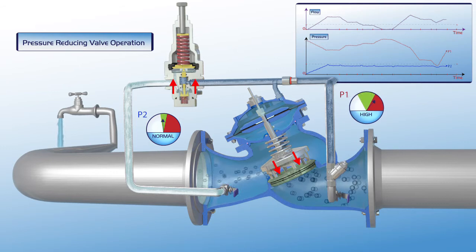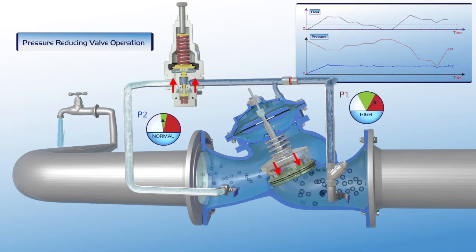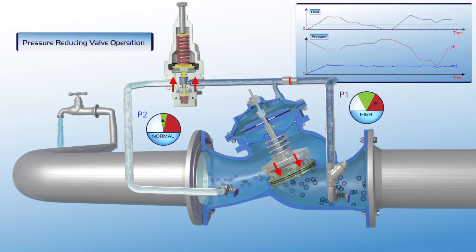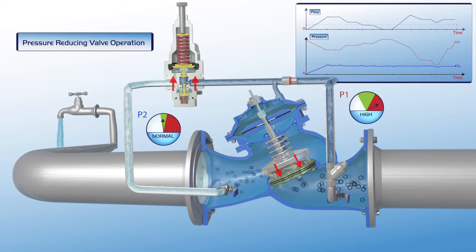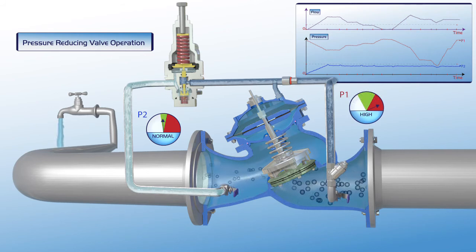When upstream pressure rises again, the valve responds by gradually closing slightly, thus maintaining P2 downstream pressure within its green zone settings. As shown on the chart, the valve maintains a constant downstream pressure, even when the upstream pressure rises to a very high level.